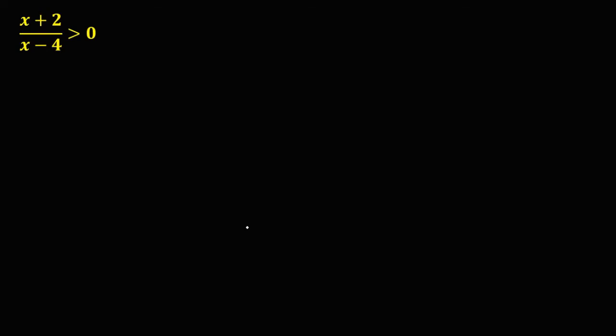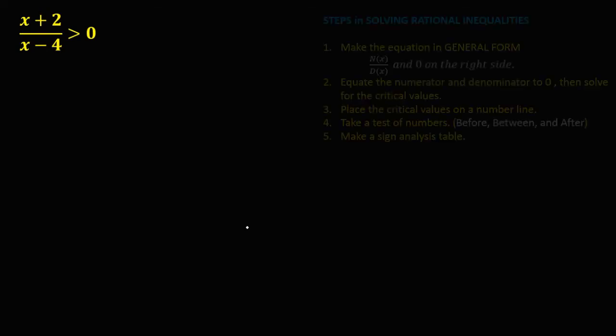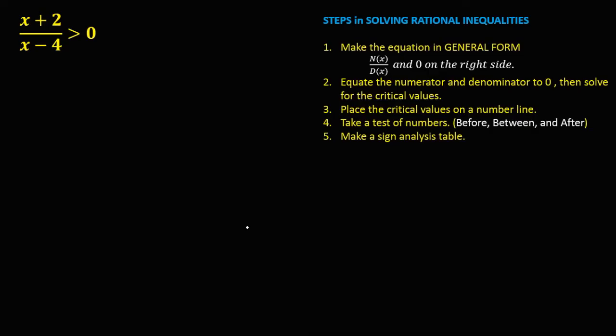Solving rational inequalities. In solving rational inequalities, we have these five steps. First, make the equation in general form — that's numerator over denominator, then zero on the right side.